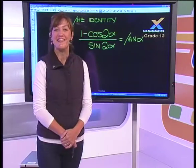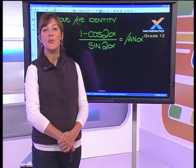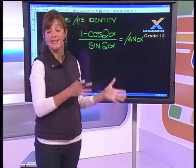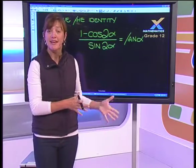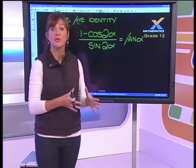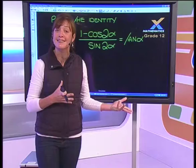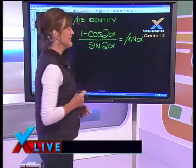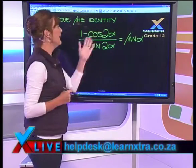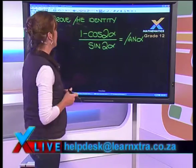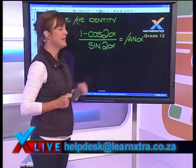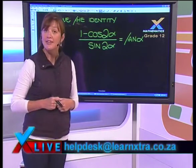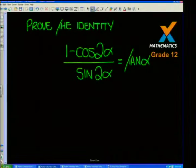Thank you very much. We've now had a look at the theory — the identities for compound and double angles. Now let's put a little bit of theory into practice. We have an identity: 1 minus cos2α over sine2α, and we're asked to prove that it equals tanα.